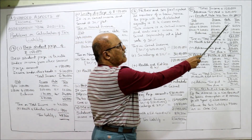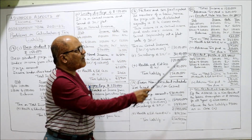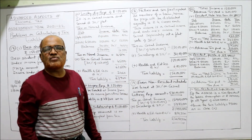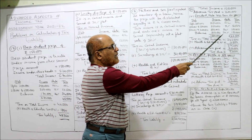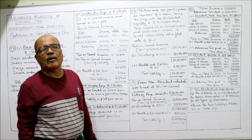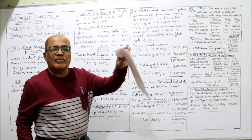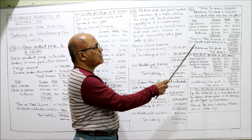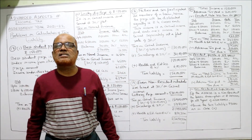Total income fifteen lakh; slab calculation: up to two lakh fifty thousand — nil; two lakh fifty thousand to five lakh at 5% — twelve thousand five hundred; five lakh one to ten lakh at 20% — one lakh; balance five lakh at 30% — one lakh fifty thousand. Total tax two lakh sixty-two thousand five hundred. No surcharge since income is below fifty lakh. Health and education cess at 4% adds ten thousand five hundred. Tax liability: two lakh seventy-three thousand.